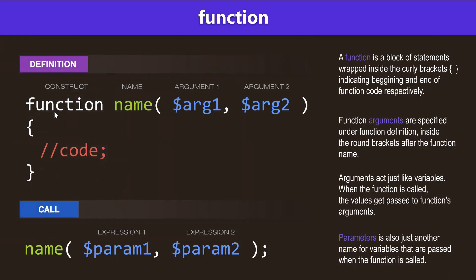Just a quick review: we define a function using the construct 'function' followed by the name. Inside the round brackets we have function arguments separated by a comma — you can think of arguments as future placeholders for the actual values. When we call a function we use the function name, round brackets, and inside we have the parameters separated by a comma. The parameters are the actual values for the arguments, and they're going to be passed over to the arguments and inside the function's code they're going to be modified or printed out or whatever.